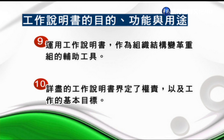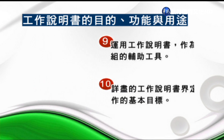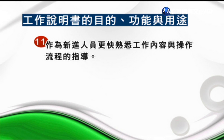看看兩個組織之間有沒有職位的重複性，當有職位重複性時就會做調整或人員職位的異動。第十項，詳細的工作說明書界定了權責的範圍以及工作的基本目標；同時也分析了組織內部如何聯繫跟內部合作，工作說明書裡會記載這個職位關係利害人之間的網絡。第十一項，可以作為新進人員更快速熟悉工作內容跟操作流程的指導，並隨時檢查該職務的行為。